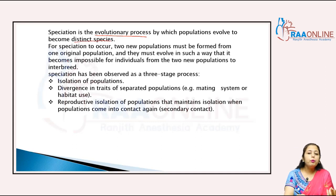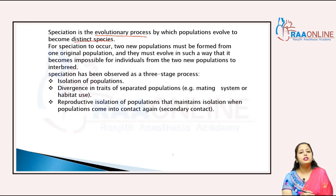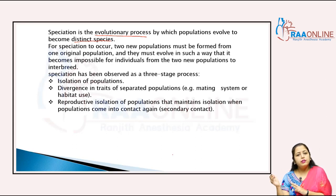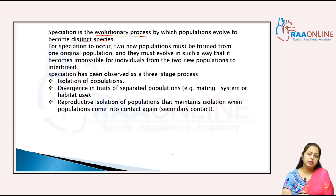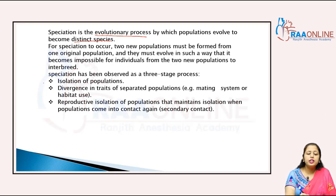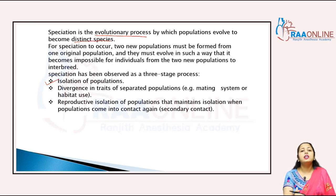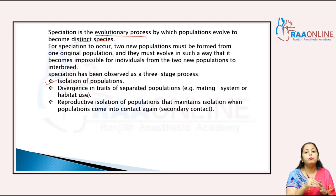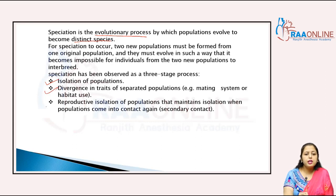For speciation to occur, two new populations must be formed from one original population, and they must evolve in such a way that it becomes impossible for individuals from the two new populations to interbreed. There are three stages: first, isolate the population with desired characters; second, divergence in traits such as mating system or habitat; third, reproductive isolation to maintain separation when populations come into secondary contact.